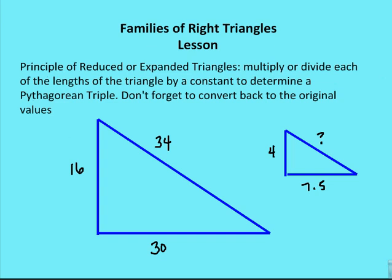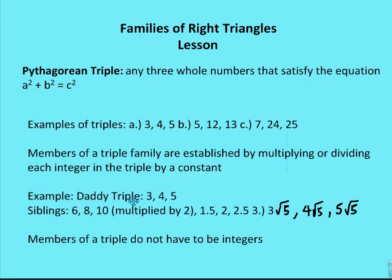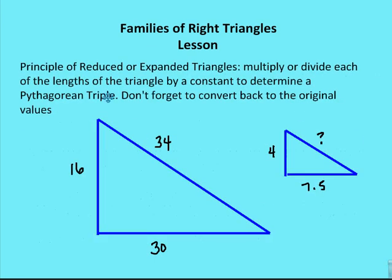So we talked about the big daddy triangle. We said daddy triple is 3, 4, 5, and the siblings can be 6, 8, 10, or 1.5, 2, 2.5, or 3 root 5, 4 root 5, 5 root 5. So there are a couple different possibilities in terms of expanding or reducing the triangle, but keeping the same triple as a family.